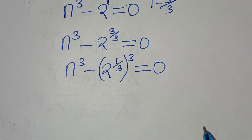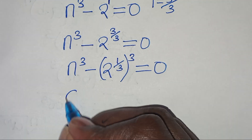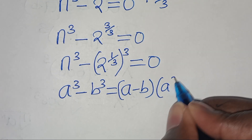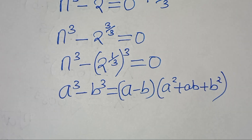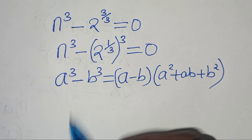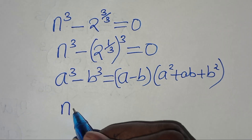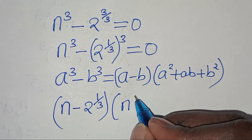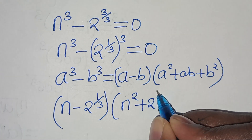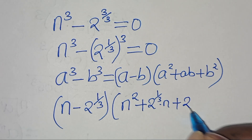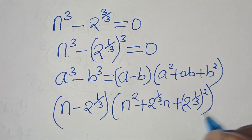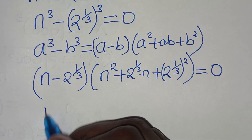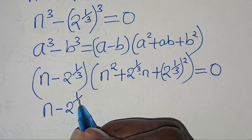This equals 0. This equation is of the form a to the power of 3 minus b to the power of 3, which we can express as (a minus b)(a squared plus ab plus b squared). Applying this identity, we have (n minus 2 to the power of 1 over 3) as the first factor, giving us n minus 2 to the power of 1 over 3 equals 0, so n₁ equals 2 to the power of 1 over 3, or the cube root of 2.